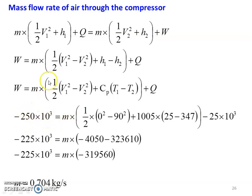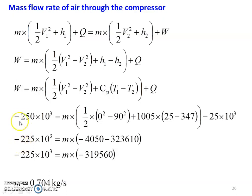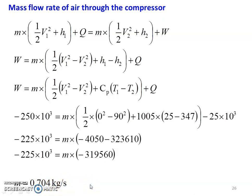Substituting all numerical values: −250 × 10³ = M × [(1/2)(0 − 90²) + 1005 × (25 − 347)] + (−25 × 10³). The Q term moves to the left side, giving −225 × 10³ = M × (−4050 − 323,610) = M × (−319,560). Rearranging to solve for M: M = 0.704 kilogram per second. So the mass flow rate of the air through the compressor is 0.704 kg/s.